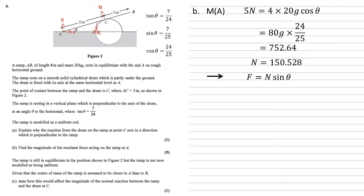This time we're going horizontally, so we want N sine theta. N is 150.528 times sine theta, which is 7 over 25, equals 42.14784. Therefore F equals 42.14784.